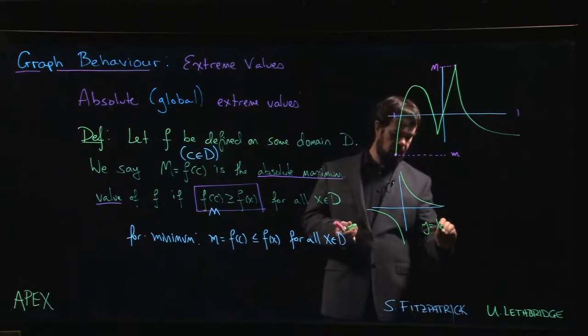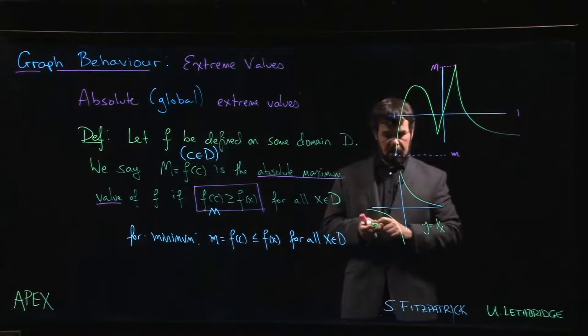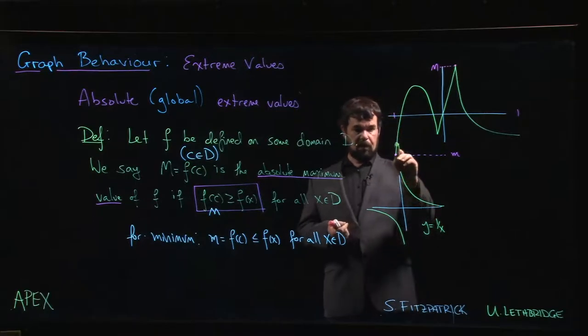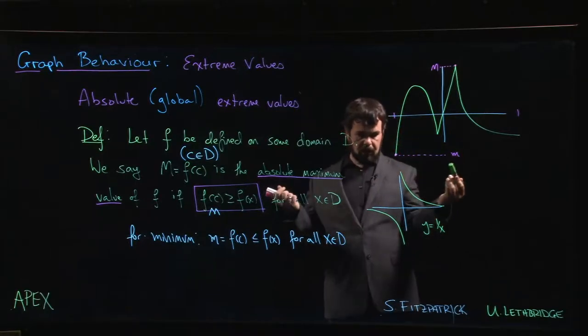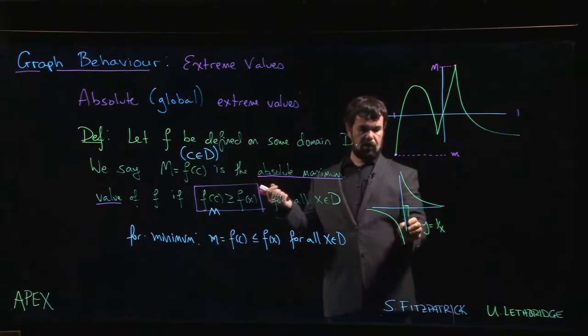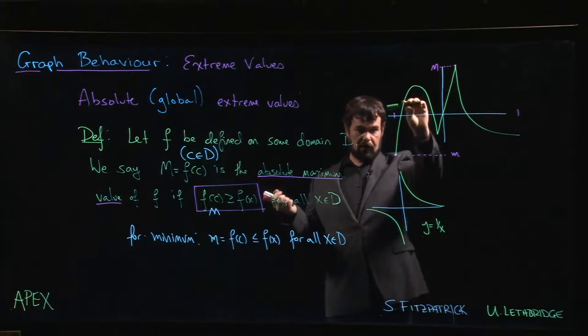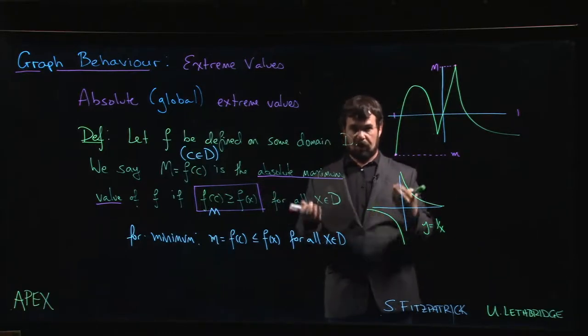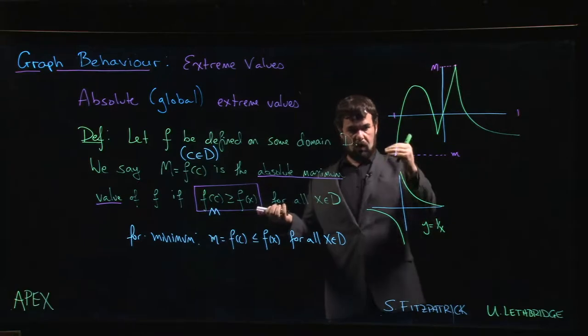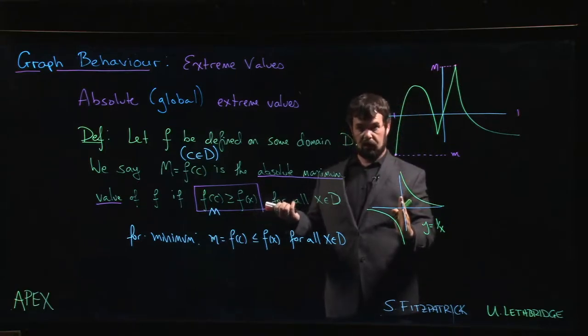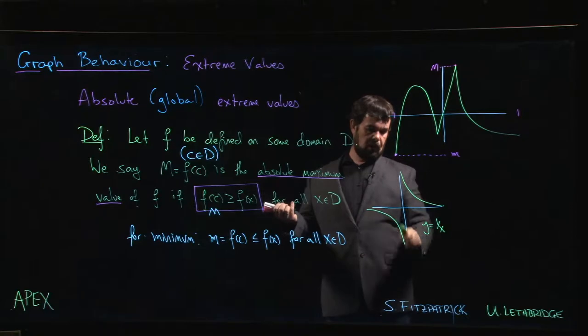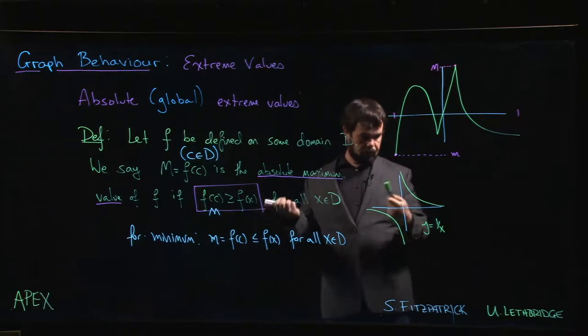y equals 1 over x. It doesn't have a maximum value because this is going to go off to plus infinity. It's unbounded. So the closer you get to 0 from the right, the bigger the y value gets. You never reach a point where you say, oh, this is the biggest y value, because you can always get bigger and bigger y values by getting x closer and closer to 0. Similarly, we can get large negative values, so there's no minimum.